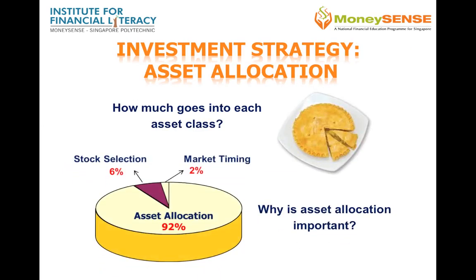Asset allocation is the process of deciding the proportion of your investment portfolio to be invested in cash, fixed income securities or bonds, and shares or equities, so as to achieve diversification and ultimately your desired balance of risk and return. Most of us tend to invest only in asset classes that we are familiar with and ignore the rest — that is, we do not diversify our investment portfolio sufficiently.